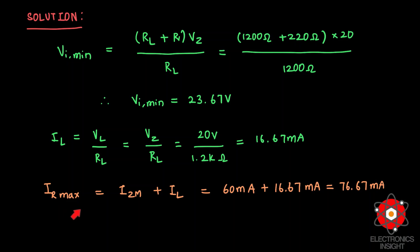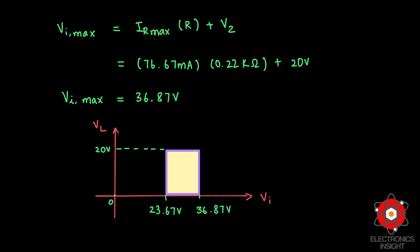IR_max equals IZM plus IL. Substituting these values gives IR_max. Our objective is to find VI_max, using the formula VI_max equals IR_max multiplied by R plus VZ. Substituting all values gives a maximum input voltage of 36.87 volts. Therefore, when the input voltage ranges from 23.67 volts to 36.87 volts, the load voltage across the Zener diode is constantly maintained at 20 volts — demonstrating line regulation.